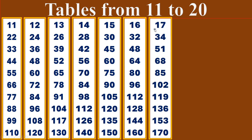17 times table. 17 ones are 17. 17 twos are 34. 17 threes are 51. 17 fours are 68. 17 fives are 85.